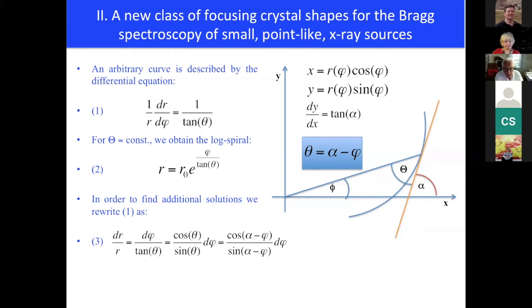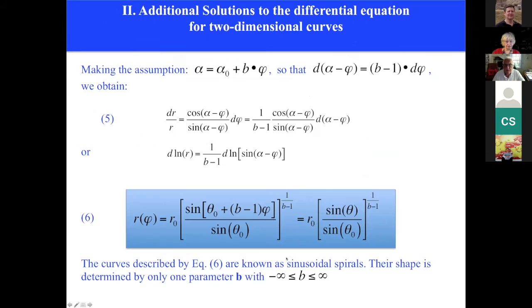But in order to find additional solutions, we rewrite the equation in the form shown in equation three. We make an assumption about the dependence of the angle alpha, the slope angle, as a function of polar angle phi. We make a simple assumption that there is a linear dependence. This allows us to express the differential d phi in terms of the differential d(alpha minus phi). We can rewrite the equation in the form given in equation five, and you see that we can immediately integrate this equation.